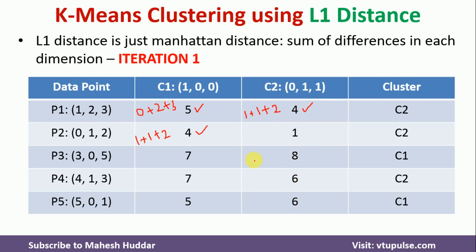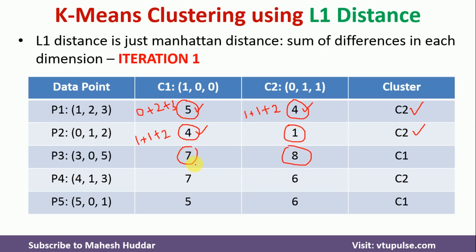Once the calculations are done, we assign each data point to one of the two clusters based on minimum distance. For P1, the distance to C1 is 5 and to C2 is 4, so P1 is assigned to C2. For P2, C1 distance is 4 and C2 distance is 1, so P2 is assigned to C2. For P3, 7 is smaller than 8, so P3 is assigned to C1. For P4, 6 is the smallest, so it is assigned to C2. For P5, 5 is the smallest, so P5 is assigned to C1.